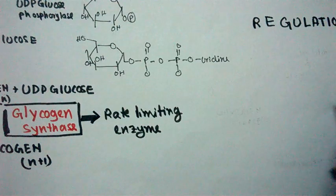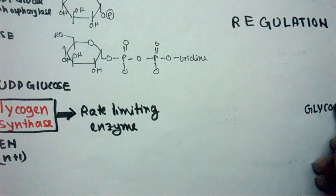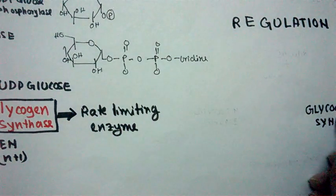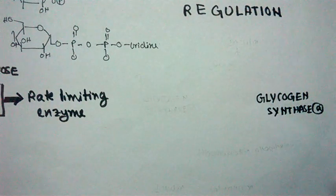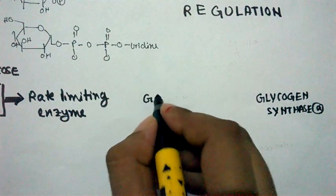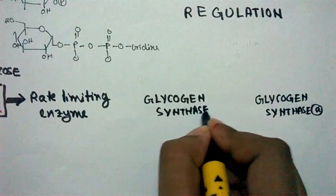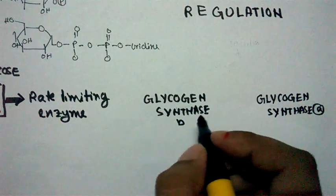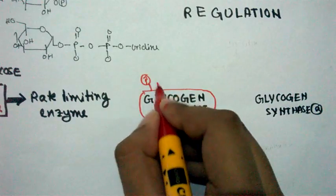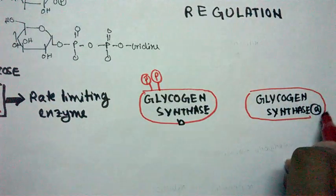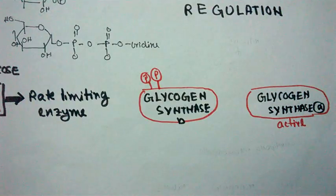Glycogen synthase generally has two forms. Glycogen synthase 'a' form is not phosphorylated and it is the active form. Glycogen synthase 'b' form is the inactive form because it is the phosphorylated version of the enzyme — in a phosphorylated state it is inactive. The switching between these active and inactive conformations ultimately regulates this pathway.